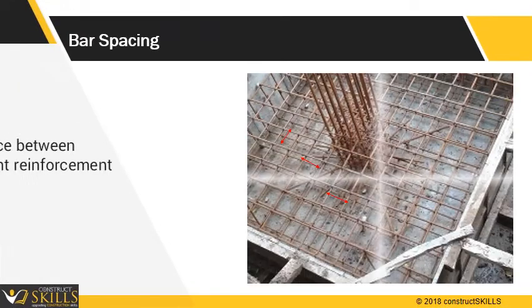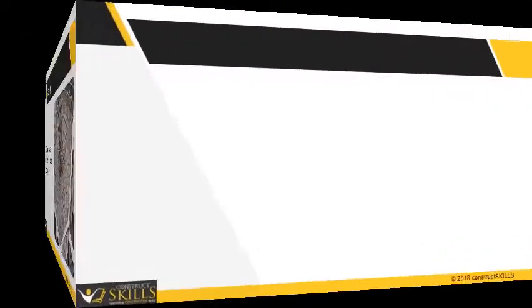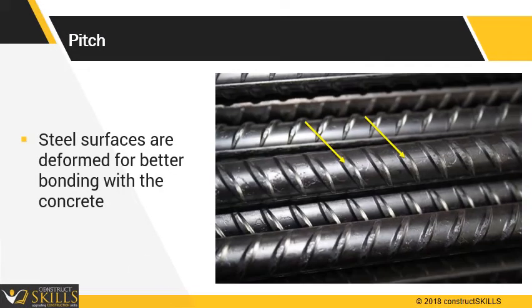Bar spacing is the clear distance between different rebars. It cannot be less than 1 inch and should at least be equal to the diameter of the bar. Pitch is the gap between deformations on a rebar. It is the center-to-center spacing between turns of a spiral.